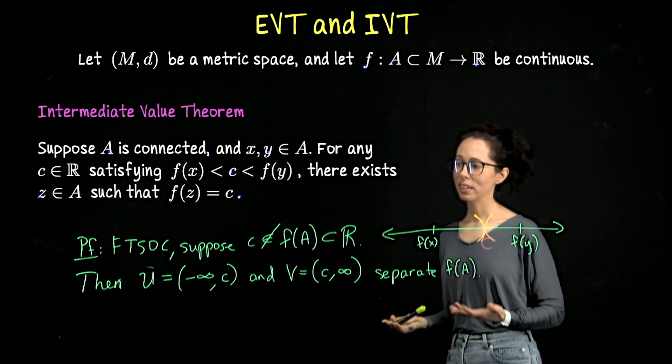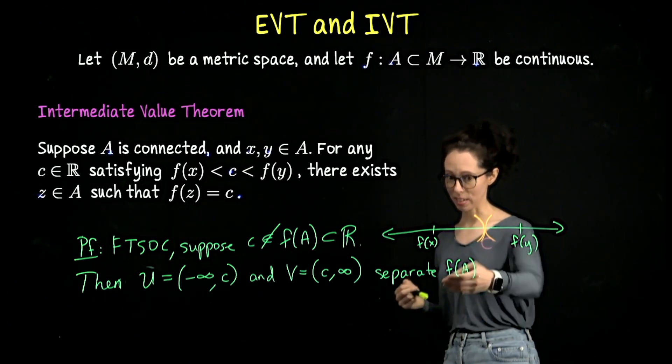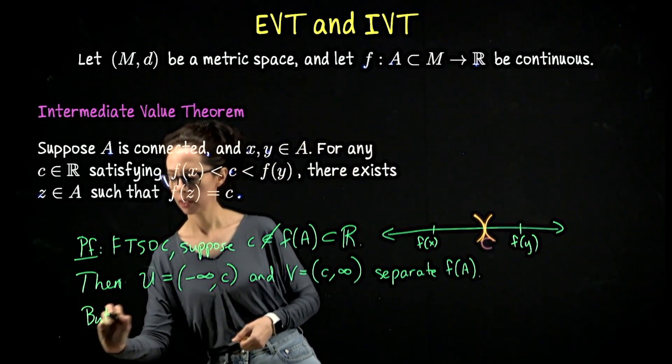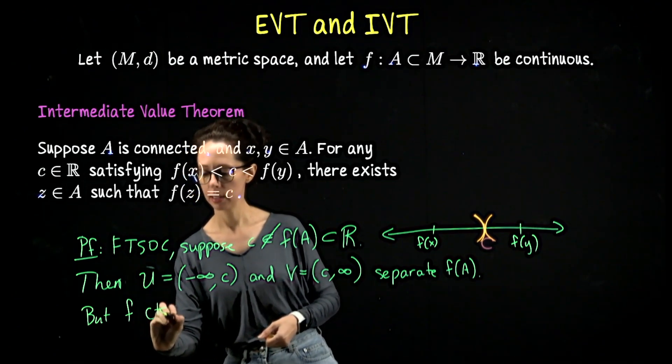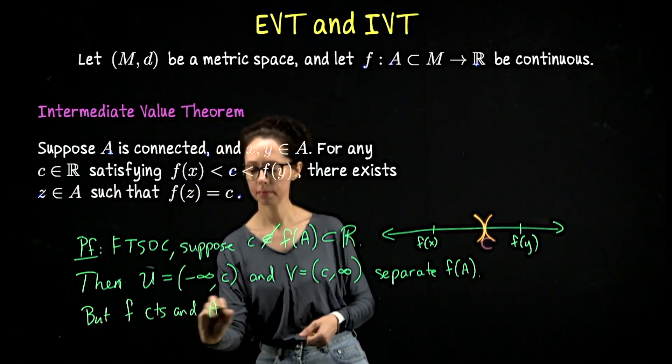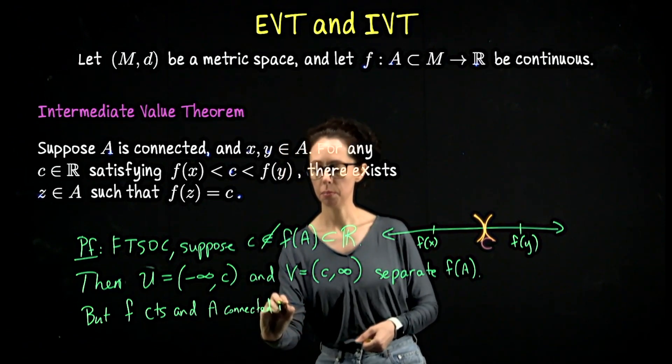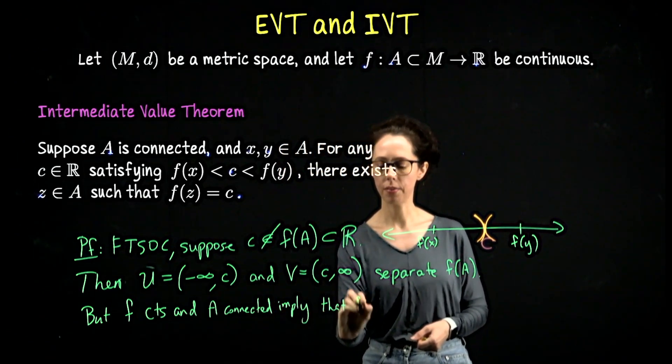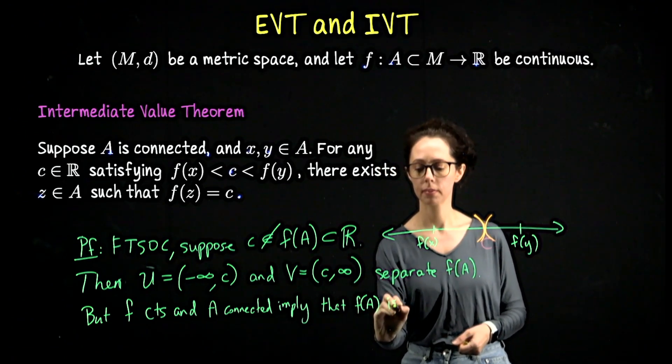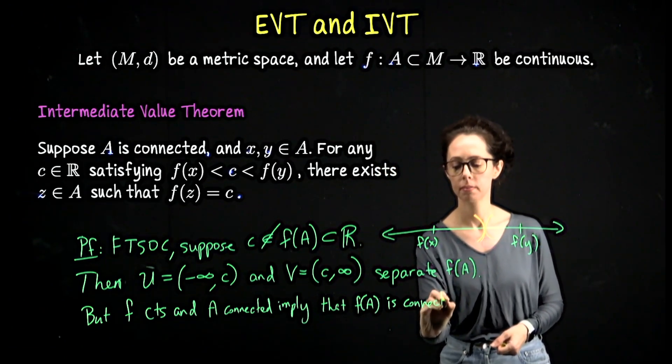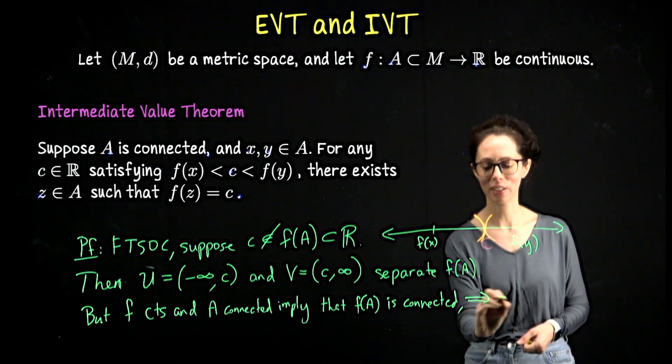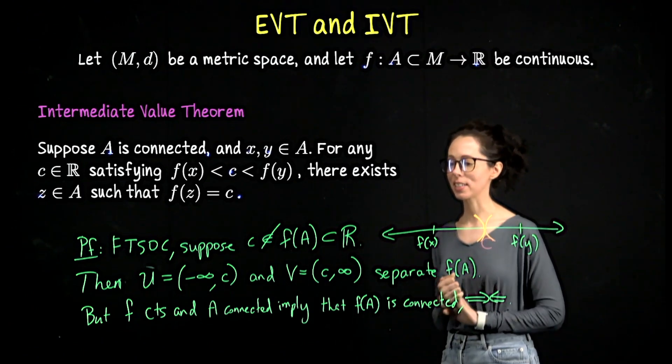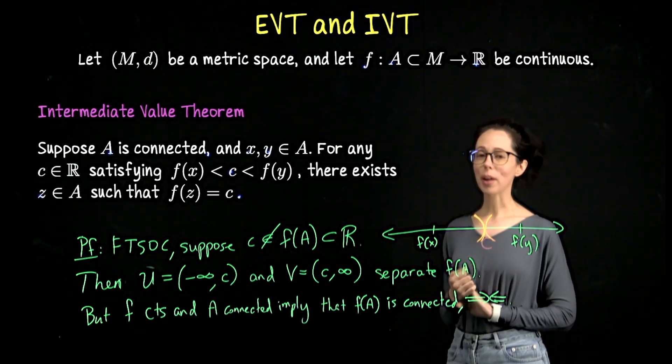But if A is connected and f is continuous, f(A) should be connected. We shouldn't be able to separate it. So f continuous and A connected imply together that f(A) is also connected and we've contradicted the line above. So you can see it's actually a nice short proof if you have the language of continuous functions on connected sets. Let's go ahead and wrap up there. Thank you for your attention.